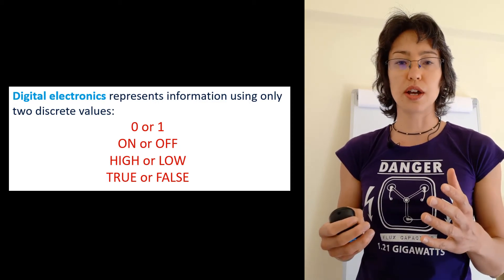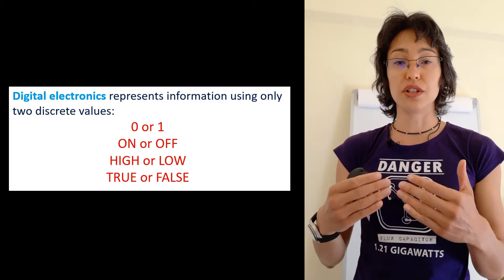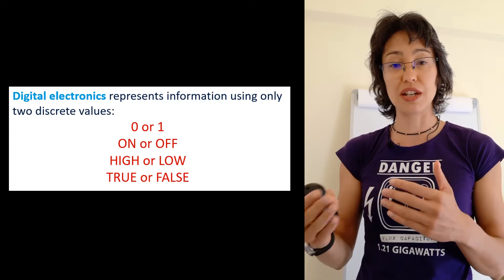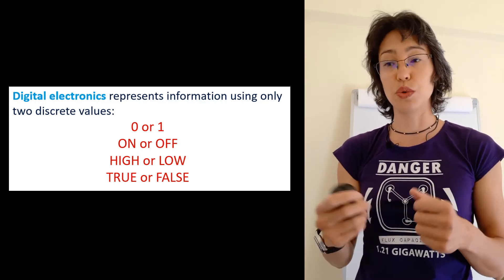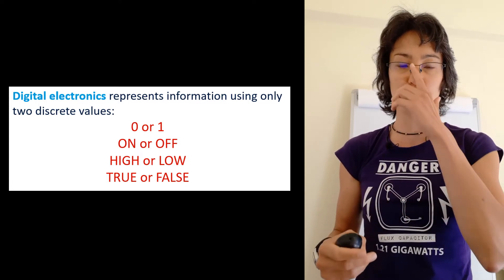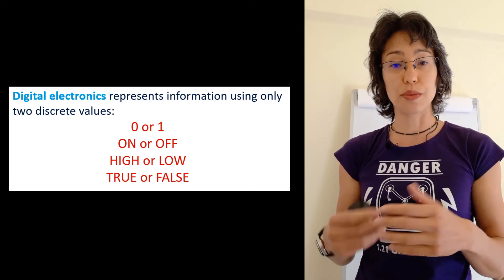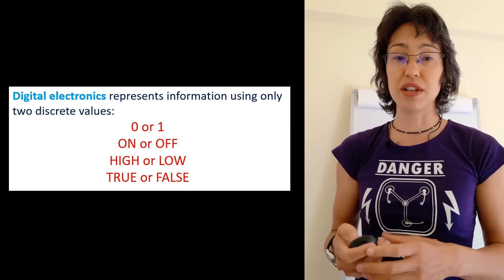Usually you can use switches in order to represent these values or achieve these values, so a switch is on or a switch is off. We tend to use transistors for switching processes, and we already talked about transistors in the previous lectures.